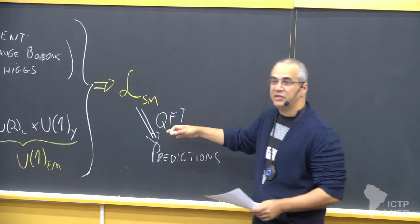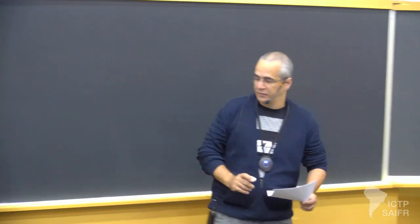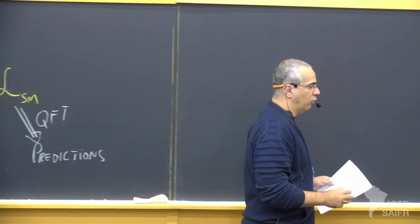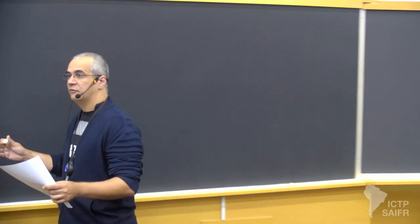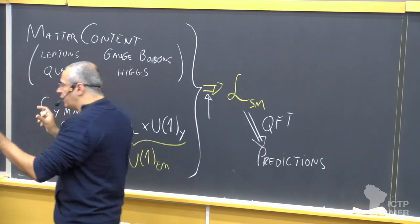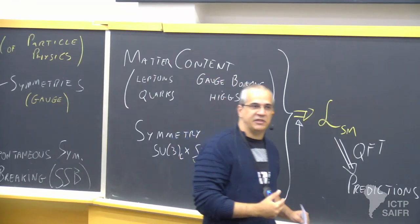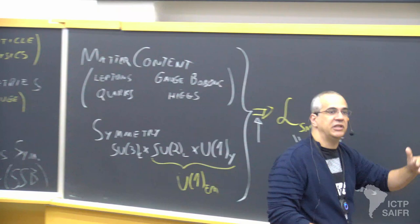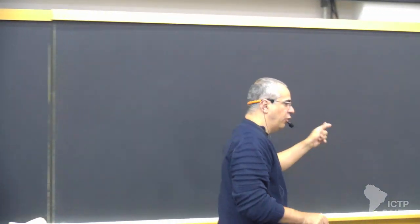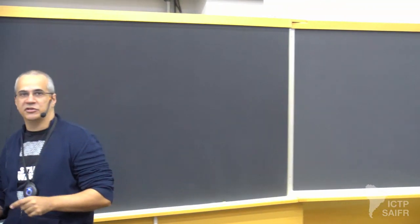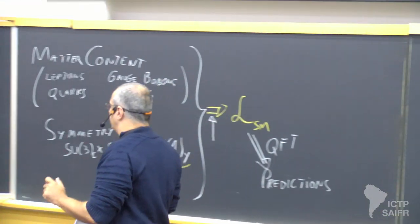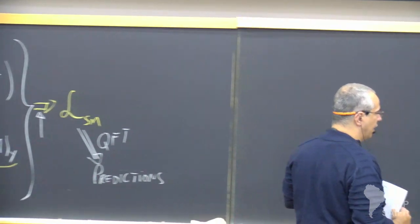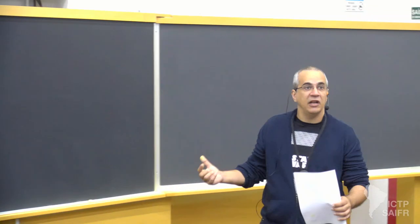We'll focus in this course more on the step of building the standard model Lagrangian — what are the ingredients that go into it, why it is the way it is, and a little bit of the phenomenology. There are some predictions of these theories that you can read straight out of the Lagrangian: which particles decay into which particles, what are the masses, how many massless and how many massive particles there are. These are qualitative predictions but good enough to understand the model.